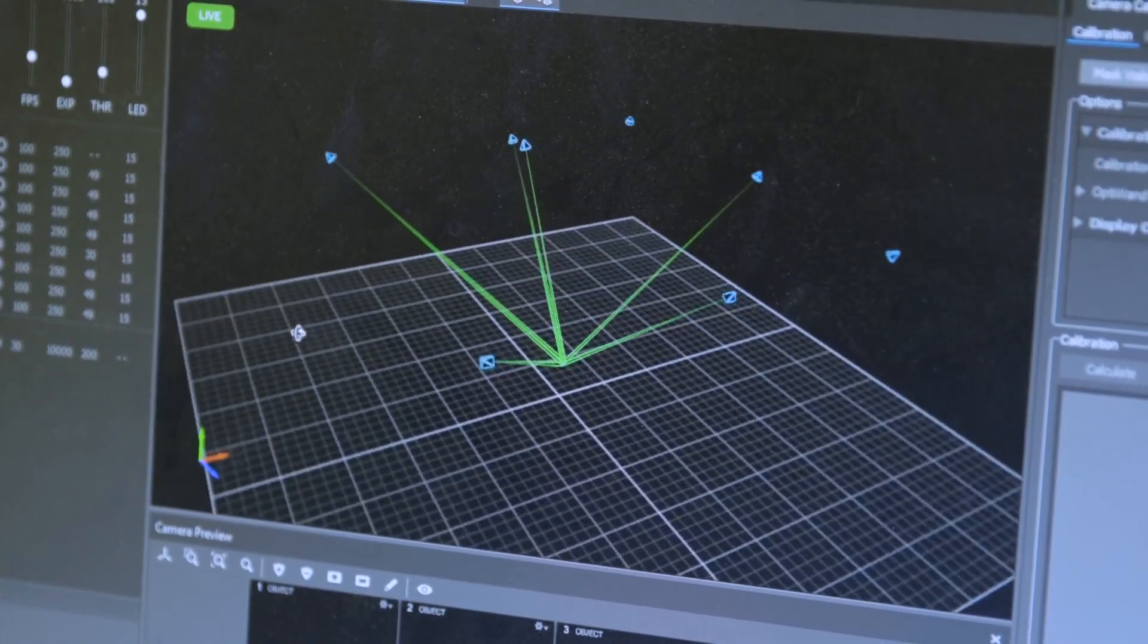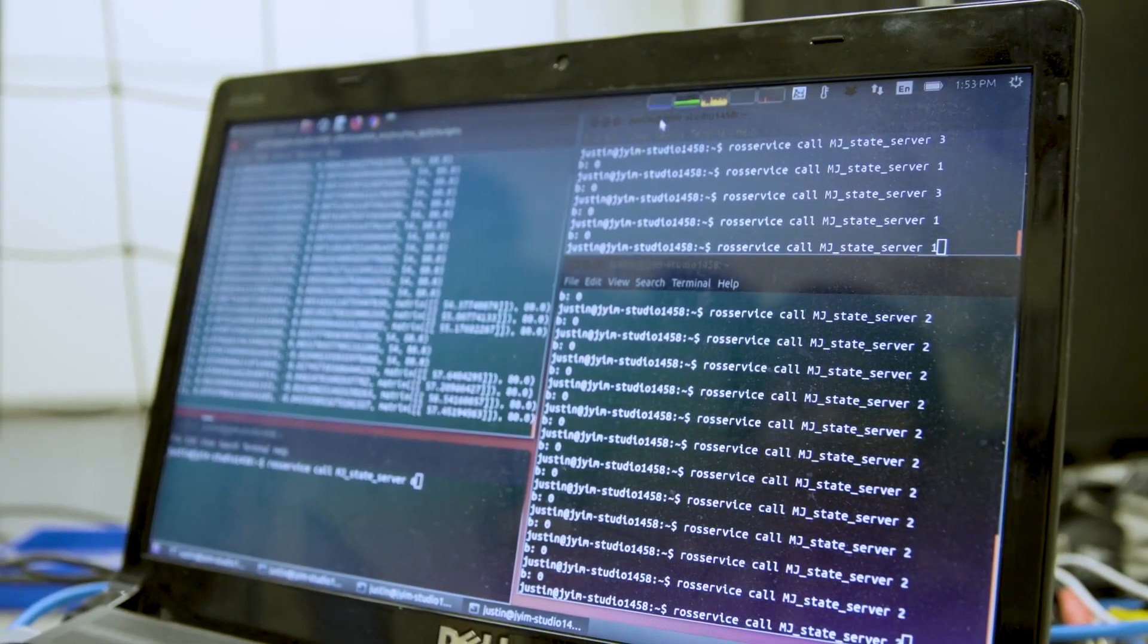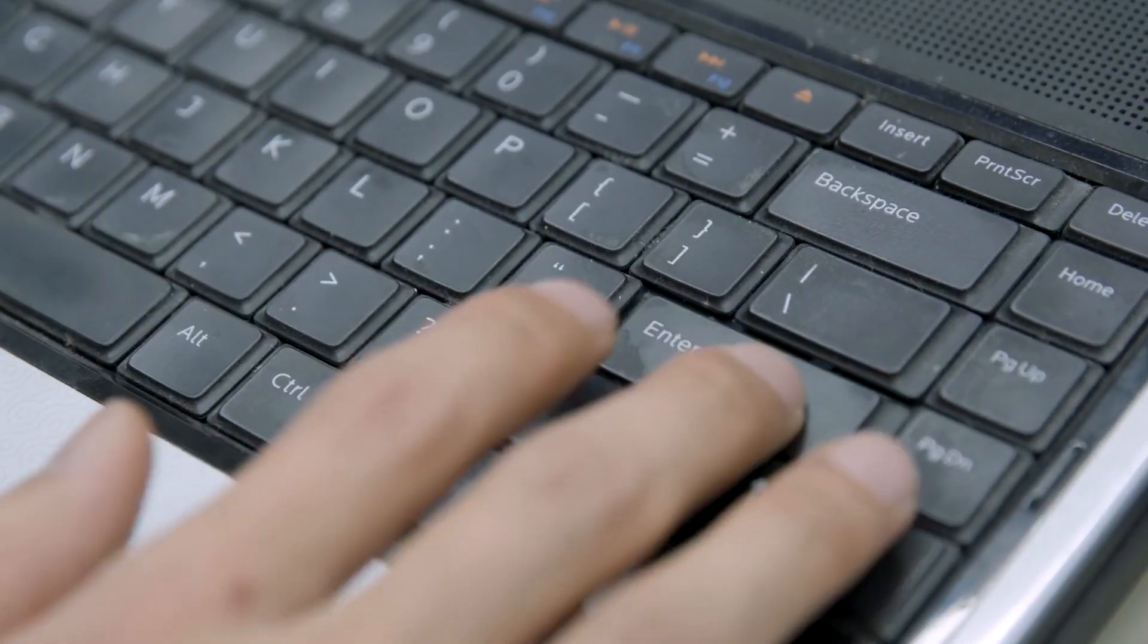My ground station laptop listens to the motion capture system to know where the robot is and then calculates what we want the robot to do and sends a radio signal to let Salto know what angle we'd like it to reach and how to extend its leg.